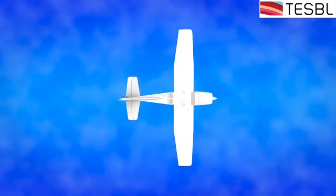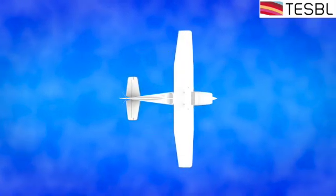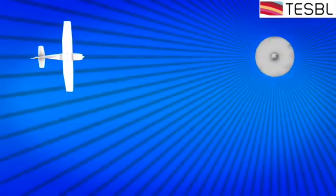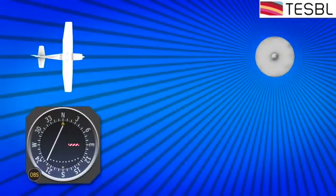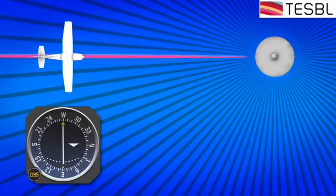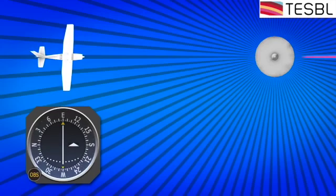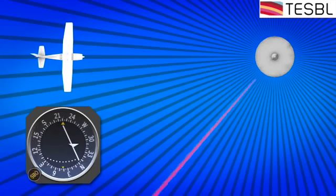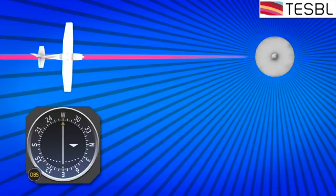If at any time you want to figure out where you are in relation to a VOR, all you need to do is find what radial you are on. That means on your indicator you need a centered CDI needle and a 'from' flag. Simply keep rotating the OBS knob until the CDI centers. If by chance it's centered with a 'to' flag, you are on the reciprocal radial. You need to rotate the OBS 180 degrees left or right, and it will center once again, this time with a 'from' flag.